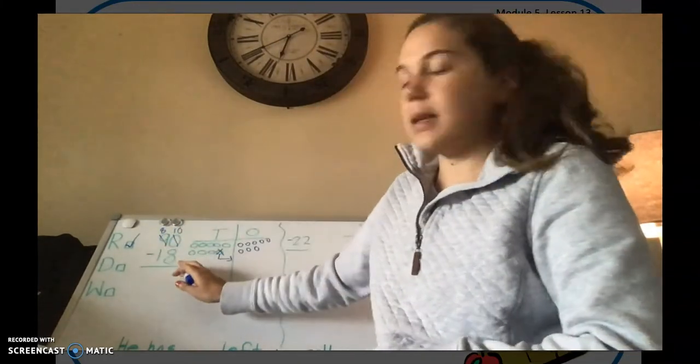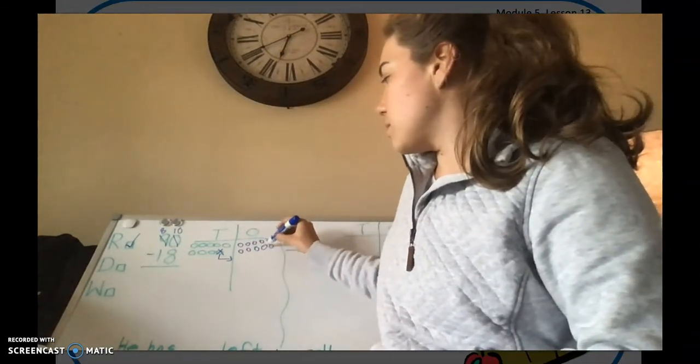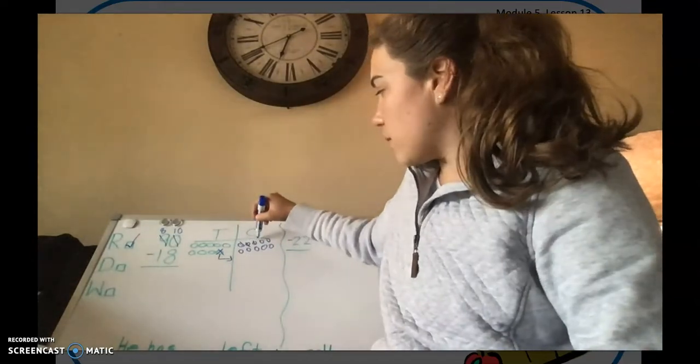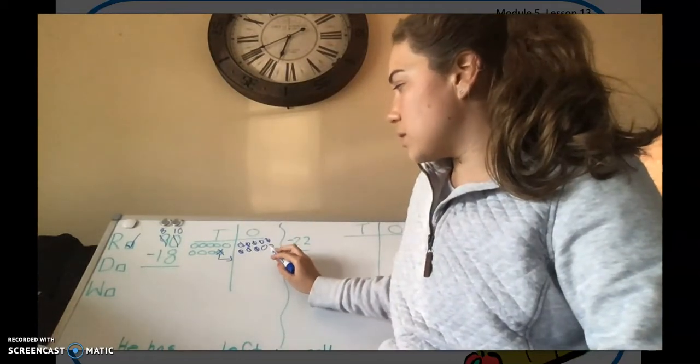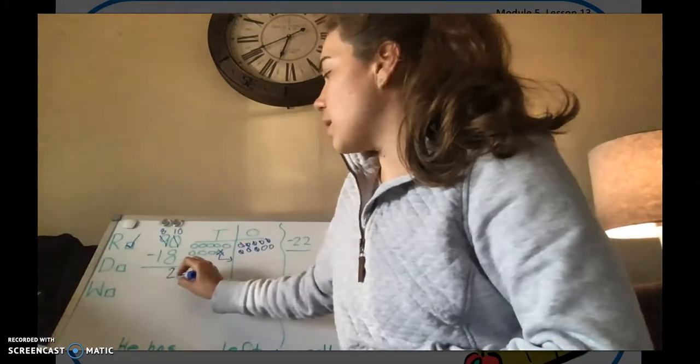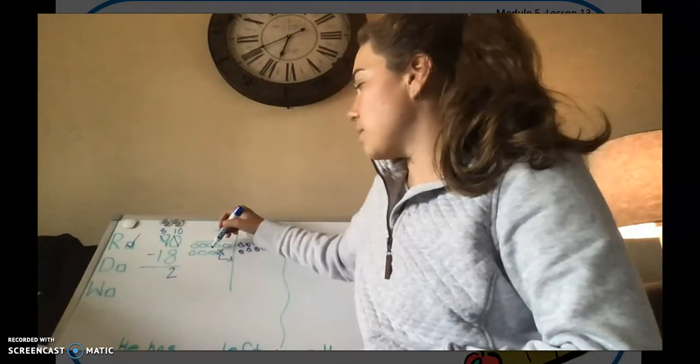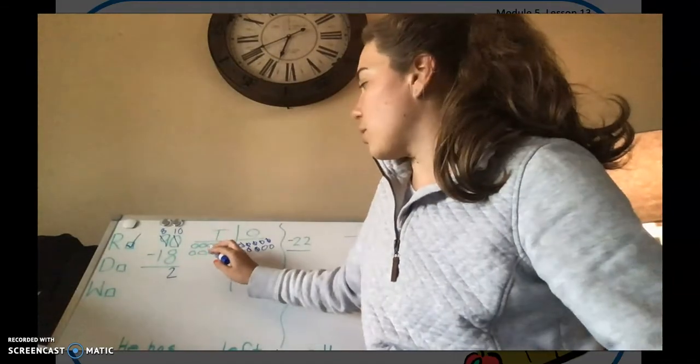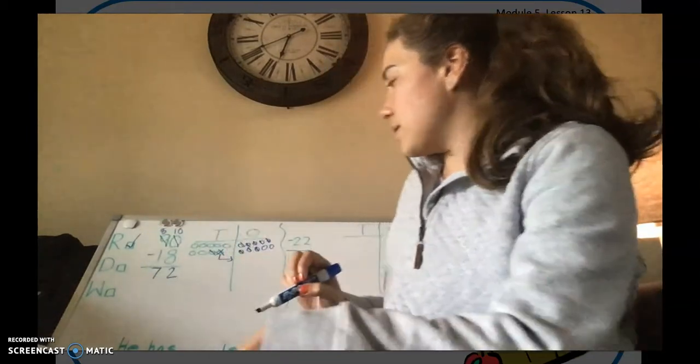So now this only has 8 and this has 10. So now we can do 10 minus 8. So I'm going to take away 8 ones: 1, 2, 3, 4, 5, 6, 7, 8. How many ones do I have left? Good. I have 2 ones left. Now I'm going to do 8 minus 1. How many tens do I have left? 1, 2, 3, 4, 5, 6, 7, 72.